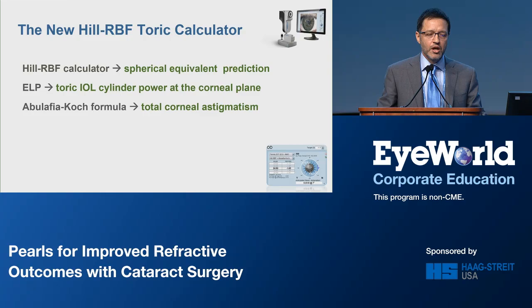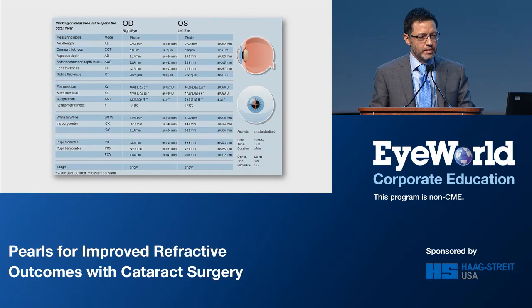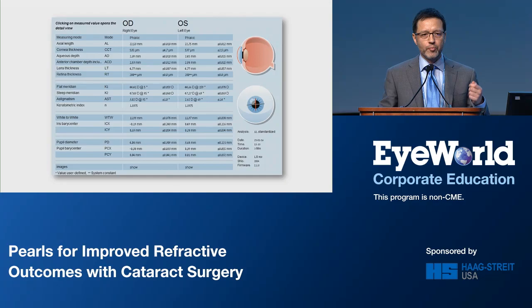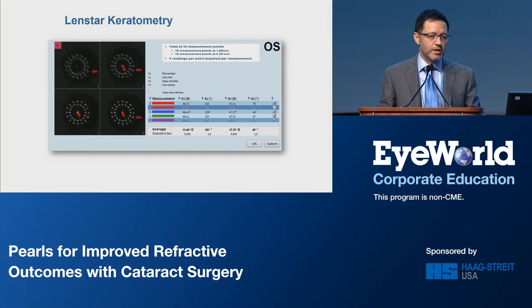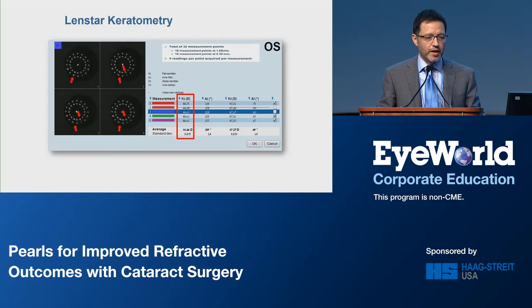The LenStar is not just like a black box where you push buttons and get numbers. You can actually see the measurements, go quickly through them, and delete the ones that you don't like, giving you a new set of Ks with standard deviation both for the flat K and the steep K, and also for the steep meridian, which is very reassuring.